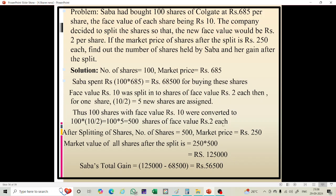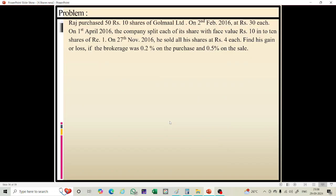Total gain equals total value after split minus initial investment, that is 1,25,000 minus 68,500, which gives a total gain of rupees 56,500. Next problem: Raj purchased 50 shares of face value rupees 10 of Goldman Limited.